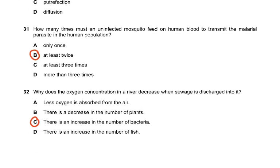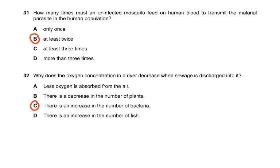Question 31: how many times must an uninfected mosquito feed on human blood to transmit the malarial parasite? At least twice. First the mosquito sucks blood from an infected person, and the Plasmodium multiplies in its stomach. Then it sucks the blood of another person — the Plasmodium migrates from the mosquito's stomach to its salivary glands, and when it injects saliva into the new host, it passes on the Plasmodium. So at least twice.